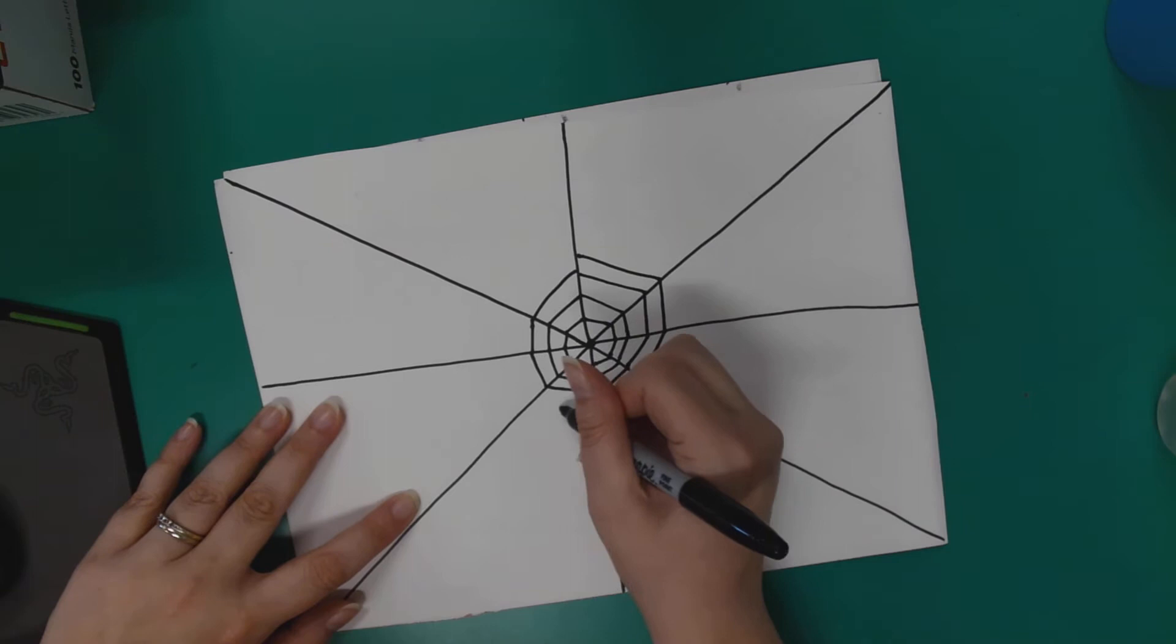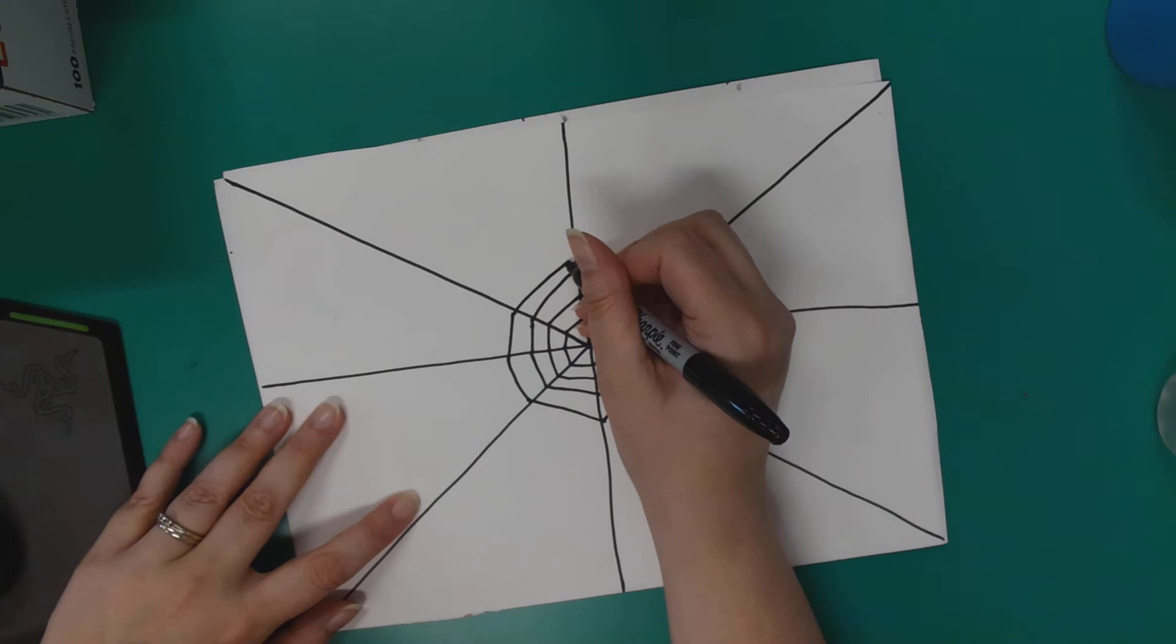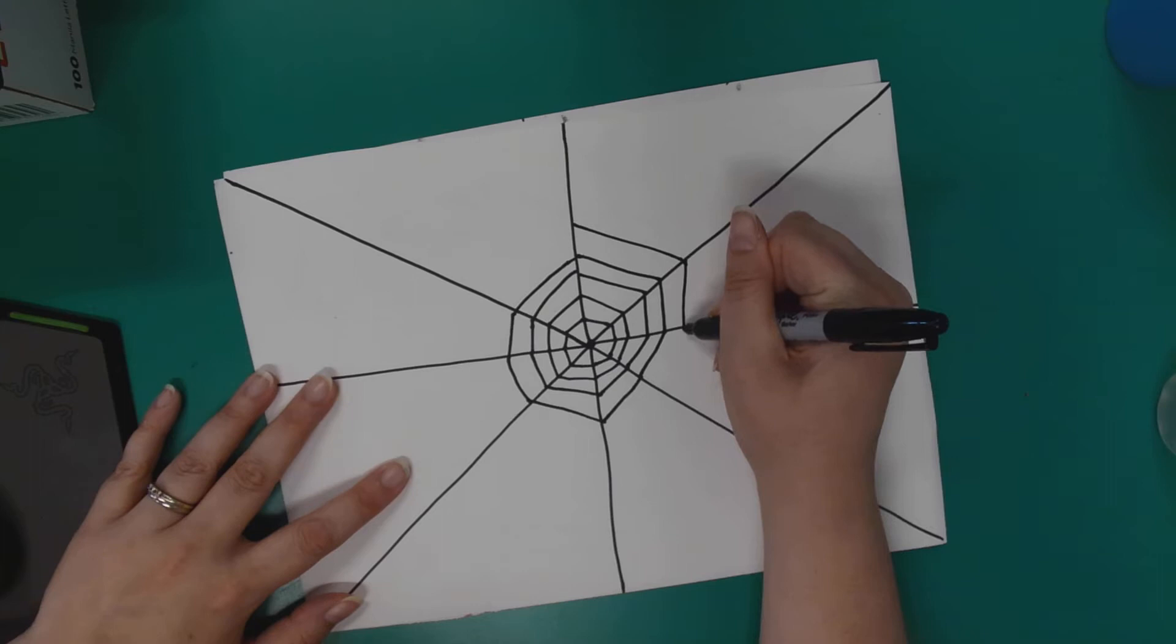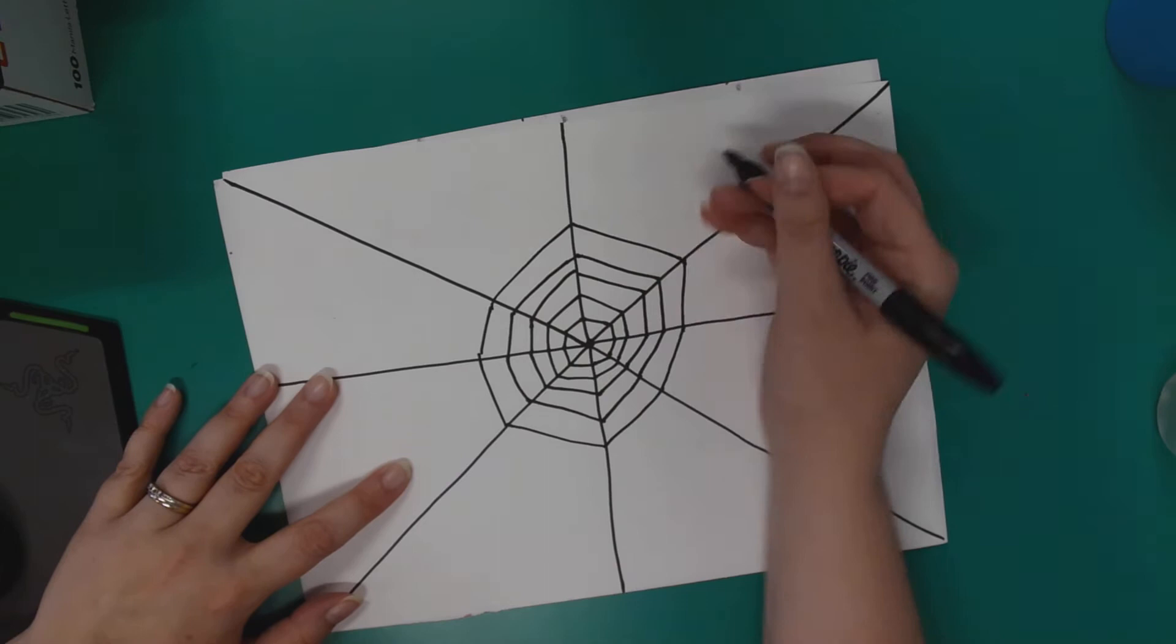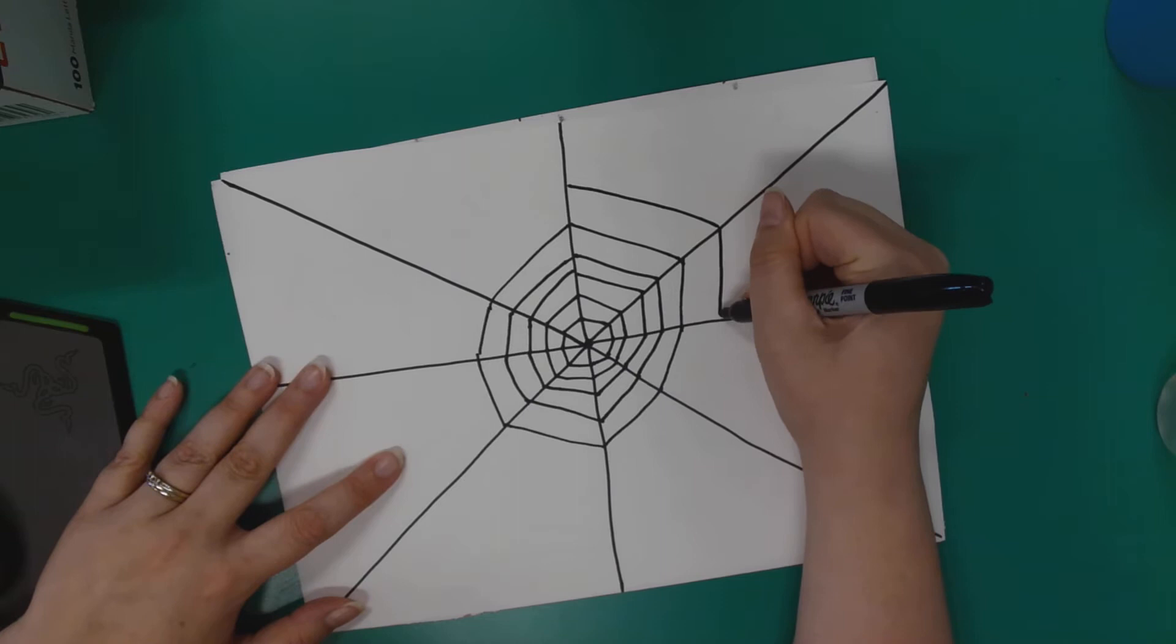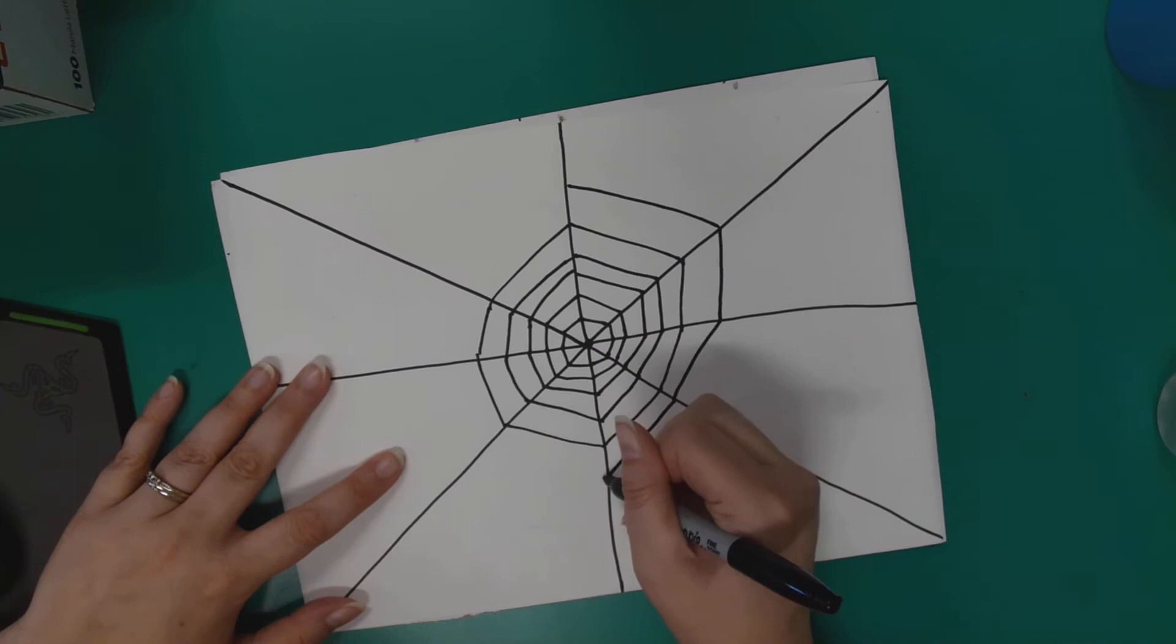The more lines you do, the more color your spider web is going to have, but you don't want to make them too close together because then you can't fit the color inside. So as you go out, start getting a little bit wider. This makes it look like it's getting bigger too, because a real spider web starts to get bigger as it goes out from the center. Kind of like a bullseye - if you think about it, a spider web is like a bullseye for bugs.